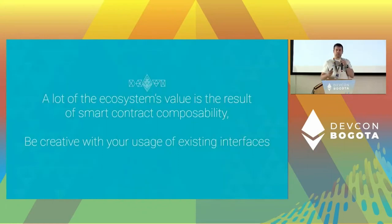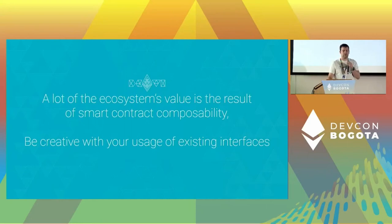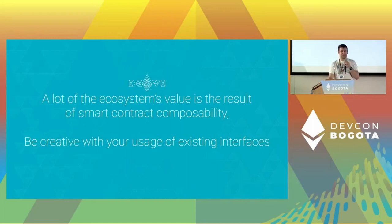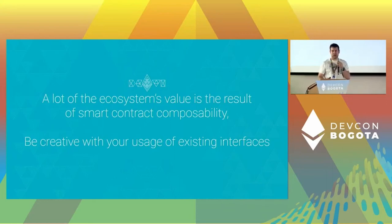One of the two main points I want to make today is that a lot of the ecosystem's value is a result of smart contract composability. That's particularly true of DeFi. The first thing you should do when writing a smart contract is make sure that you are leveraging as much composability as possible and trying to make sure that your contract can interface with all the existing tooling that would be relevant.